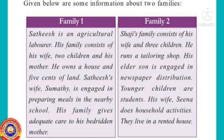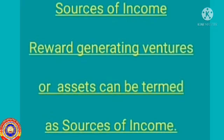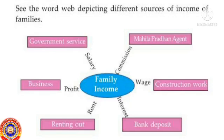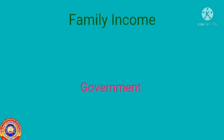Now it is clear that the sources of income are different. Reward-generating ventures or assets can be termed as sources of income. For example, business is a source of income and profit out of business is income. This is a word web depicting different sources of income of families. People engaged in government service get salary.